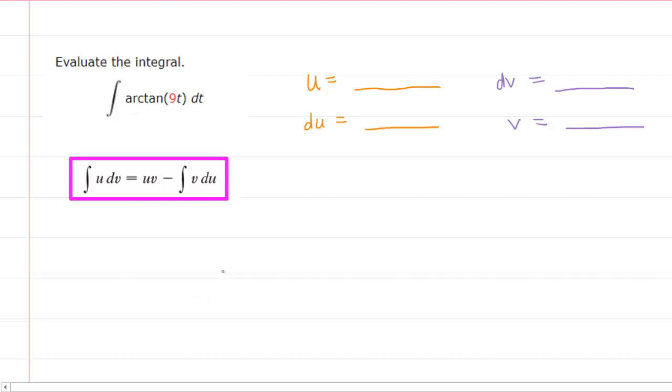is that normally with an integration by parts problem, you would have one function being multiplied by a different function. For example, you might have the integral of the function x multiplied by e to the 2x. In this particular case, it seems as though we only have one function. We have the arctan of 9t.